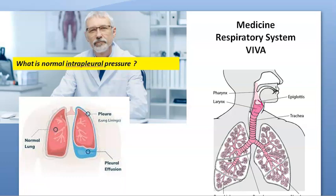What is normal intrapleural pressure? Sir, normal intrapleural pressure will be negative. It is a negative pressure that will keep the lungs in apposition with the chest wall. It is around minus 2.5 to minus 6 mmHg.